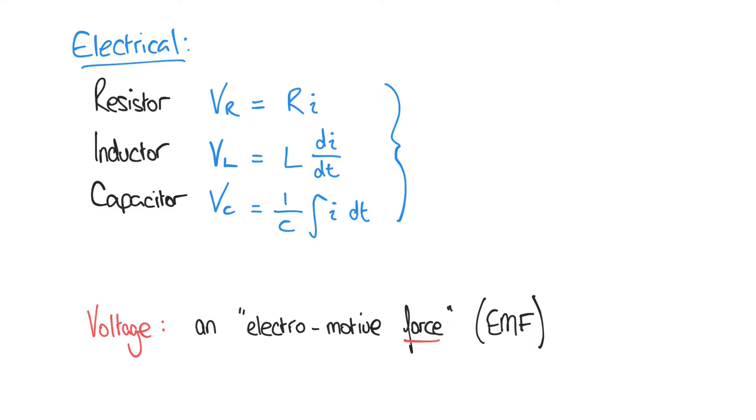So the voltage that's applied to a component kind of forces a current, I, to flow through that component in a manner that's defined by these equations that we've just seen. So let's take our resistor entry as an example. We saw that Vr equals Ri.